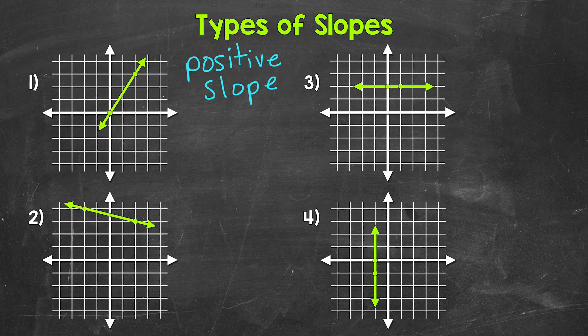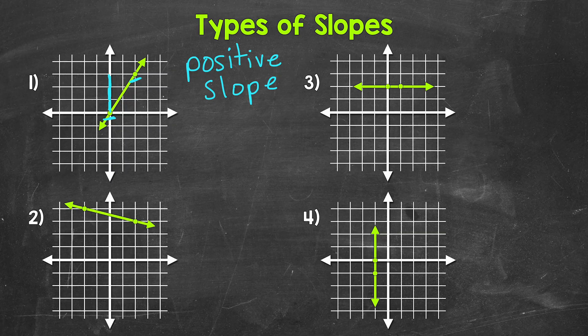Now let's find the slope of this line. Remember, slope equals rise over run — the vertical change over the horizontal change. When finding slope, we use any two points on a line and see how far up and over we go. We're going to work from the left point to the right point. Starting with the rise, the vertical change — we go up one unit, two units, three units, and now we are aligned with the other point.